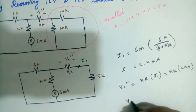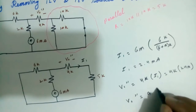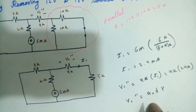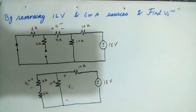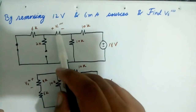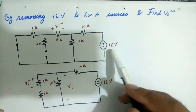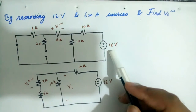V0 double dash is equal to 4K into I1, which is 4K into 2.4 milliampere, so V0 double dash is equal to 9.6 volts. This is the voltage due to the 6 milliampere current source. Now we find V0 triple dash, which is the voltage due to the 18 volt voltage source.